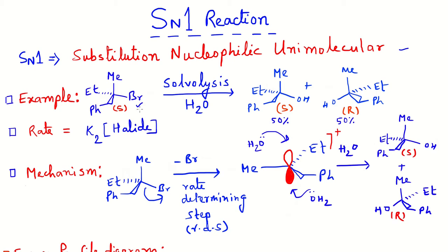A typical example is a tertiary bromide which, upon solvolysis in aqueous medium, produces two stereoisomers — two enantiomers. We started from the optically pure S isomer and obtained both the R and S isomers in a 1:1 ratio. The rate of the SN1 reaction is dependent on the concentration of the halide, that is, the substrate molecule.